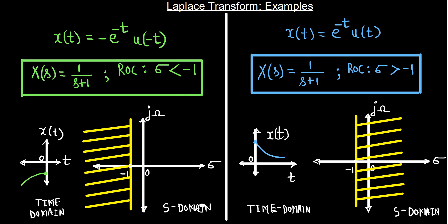Similar behavior is observed for the left-hand sided signal. The Laplace transform is the same 1/(s+1), but with the region of convergence σ < -1. The signal moving towards the left has a left-hand sided region of convergence. So for right-hand sided signals the ROC is right-hand sided, and for left-hand sided signals the ROC is left-hand sided.